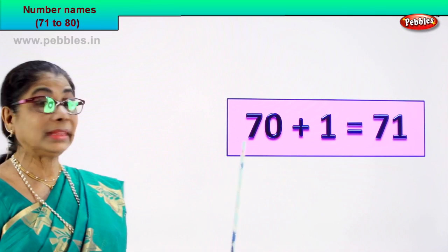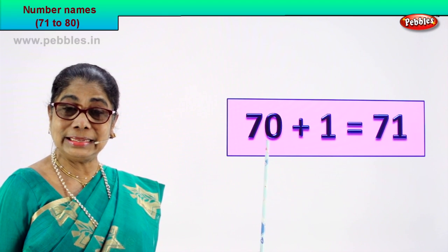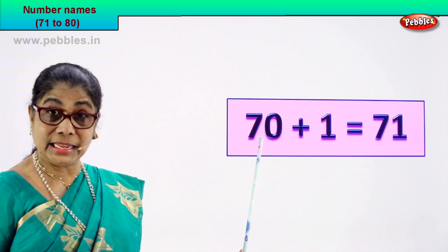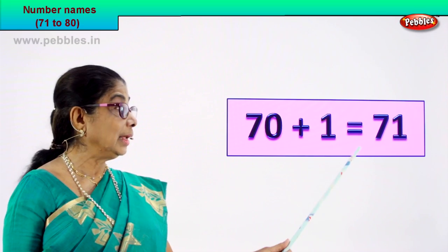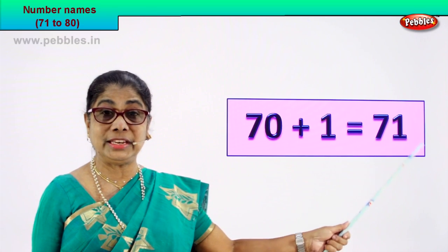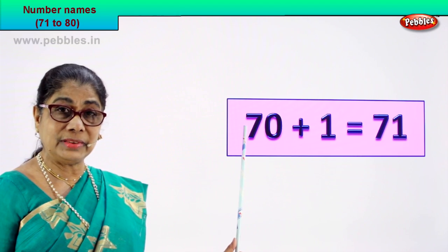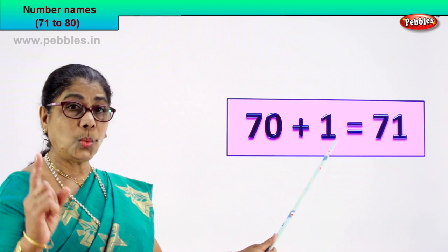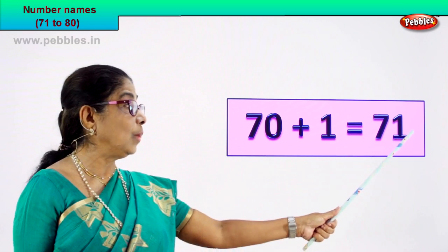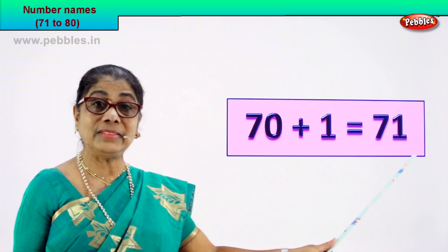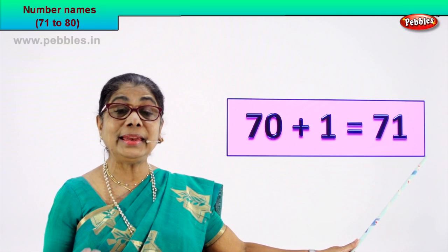Look — 70. You already learnt the spelling of 70, isn't it? Now, 70 plus 1 is equal to 71. How do we get 71? 70 plus 1 is equal to 71. 7 and 1 — 71. The numeral 71 is formed.